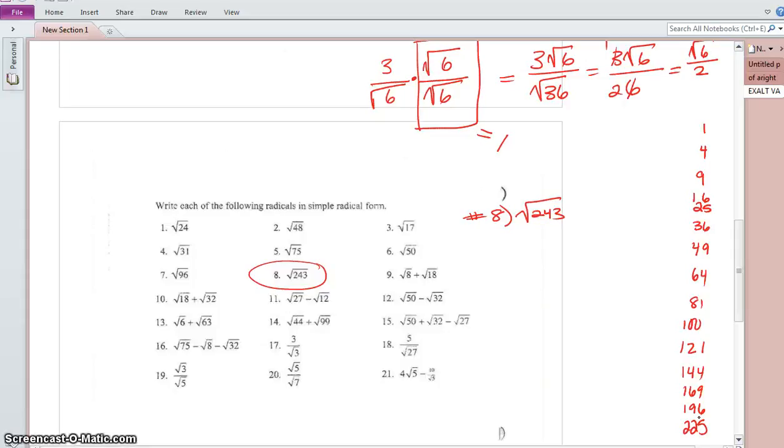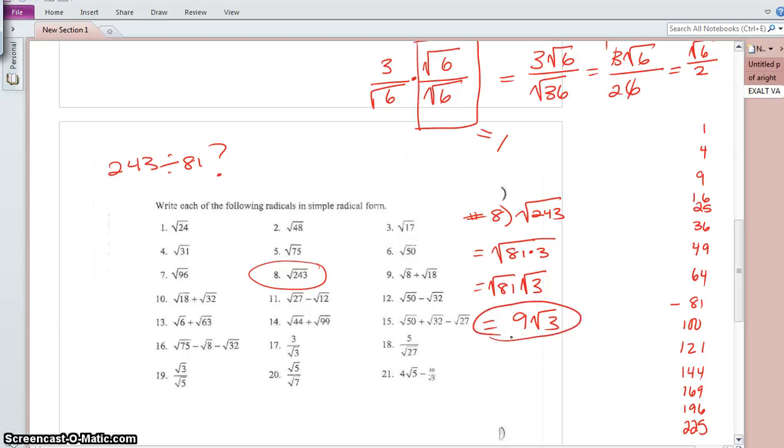So 243 divided by 81, are these two numbers compatible? Push those buttons yourself to see that 3 times 81 is 243. So I can rewrite radical 243 as the square root of 81 times 3, which allows me to rewrite it as the square root of 81 times the square root of 3, which allows me to rewrite it as 9 times the square root of 3. Now in these practices, you're going to write all of these steps. So 9 square root of 3 is the correct answer for number 8.